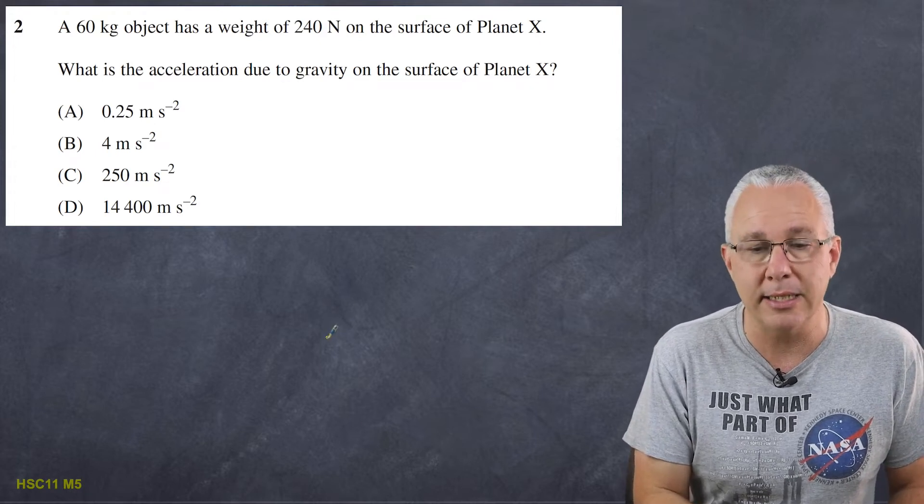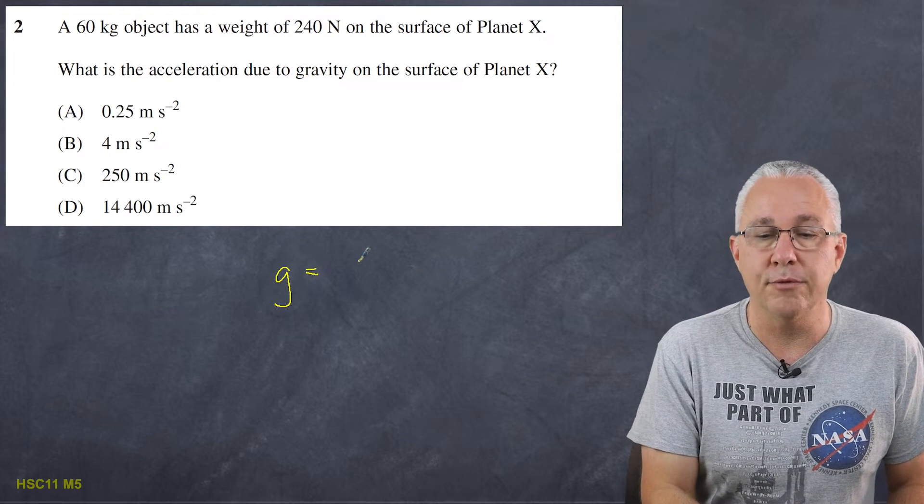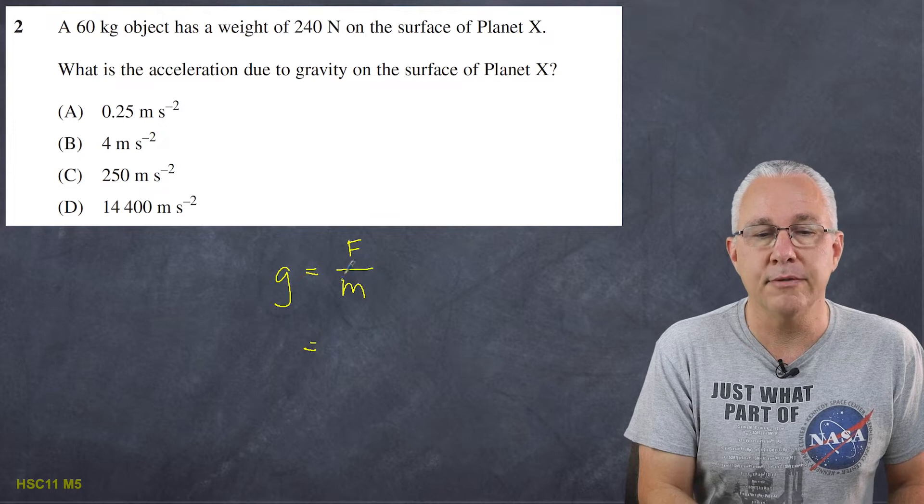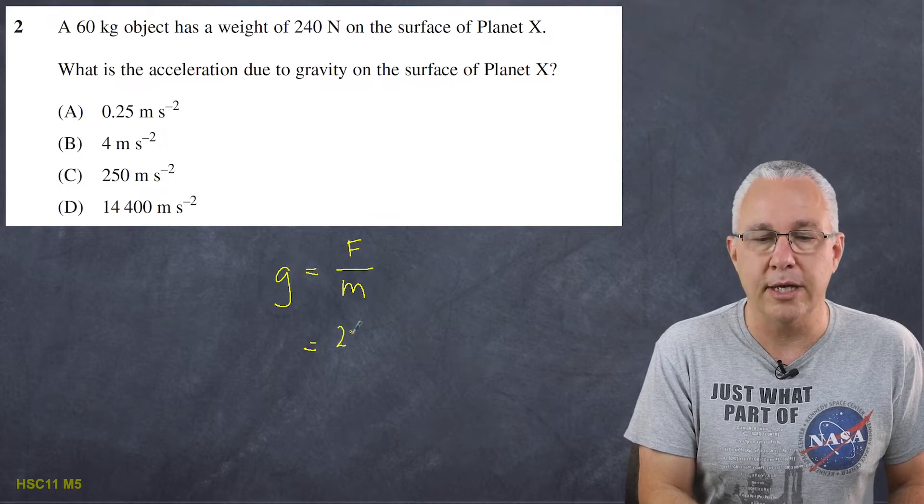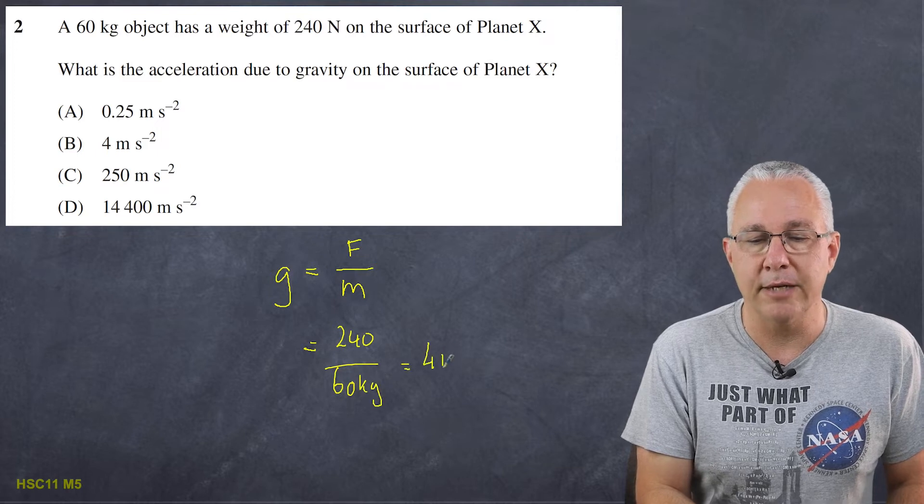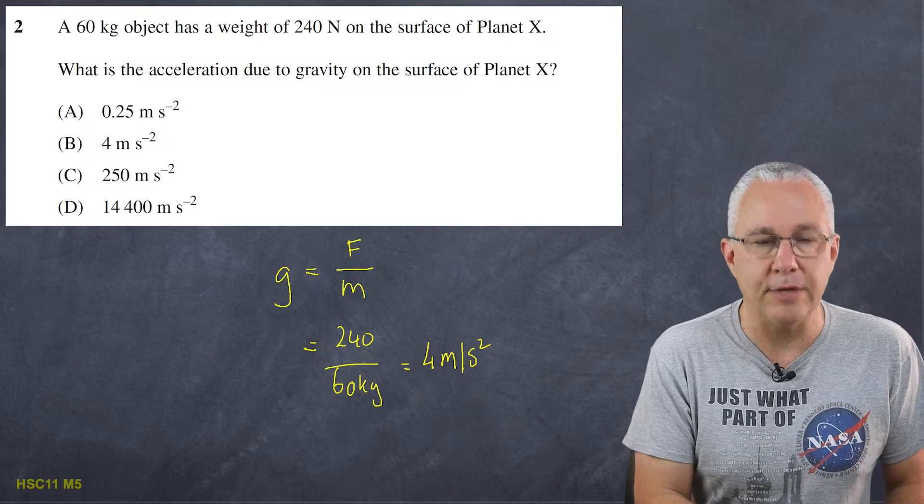It simply says that the acceleration on any particular planet is equal to the force that you experience in that gravitational field divided by the mass. The force we're told is 240 newtons. The mass is 60 kilograms. We're going to get four meters per second squared. Relatively straightforward.